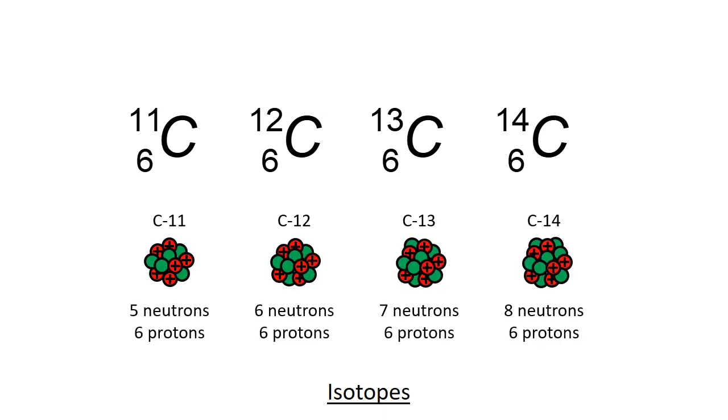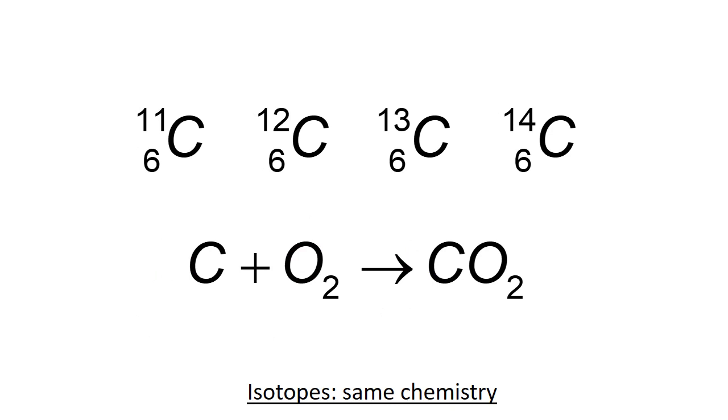So they all have six protons, but they have five, six, seven, or eight neutrons in their nucleus. So they are isotopes of the same element. So they undergo the same chemistry.